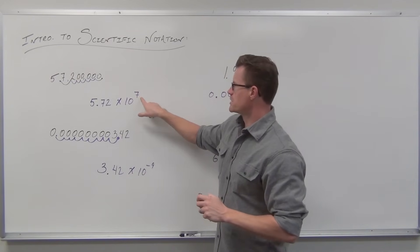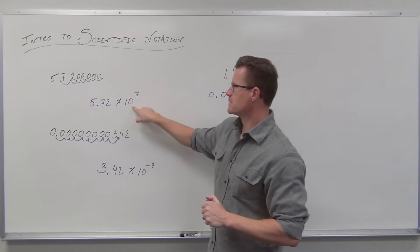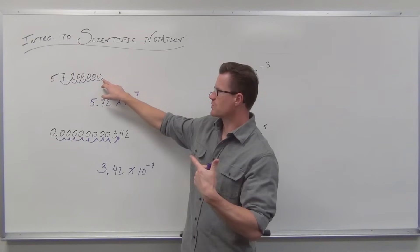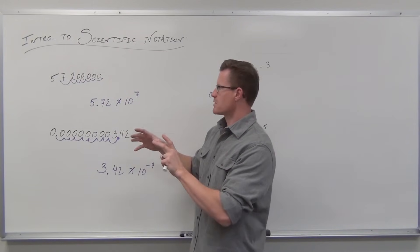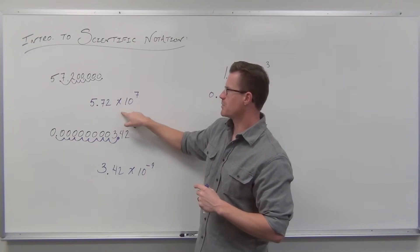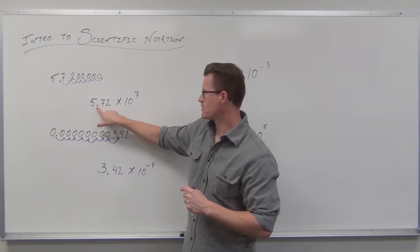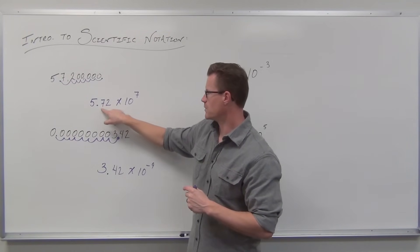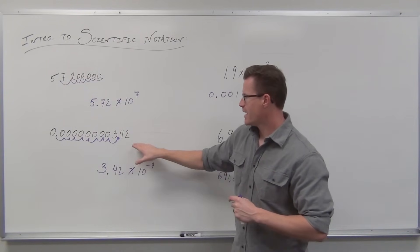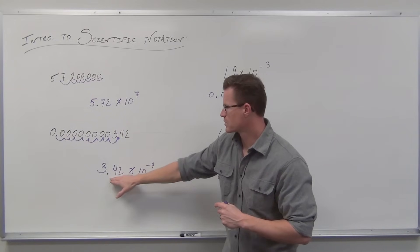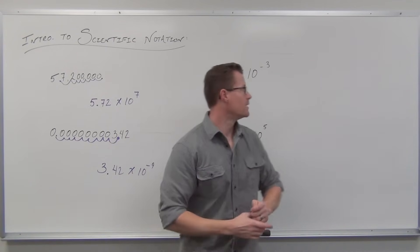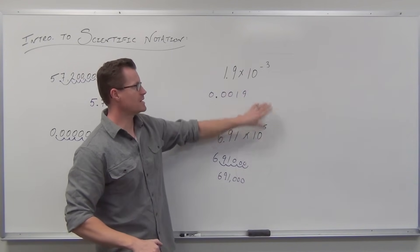So large numbers have decimal places moved to the right. I want you to think: how can I represent this as 5.72 and then move the decimal that many places to get back to your original? You'd ask, how many times do I have to move back to the original? In the first example, you'd have to multiply by 10 to the seventh — that's seven places to get back there. How many places do I move from 3.42 to get back to the original? Nine spaces to the left — that's negative, so you'd be dividing by 10 to the ninth.